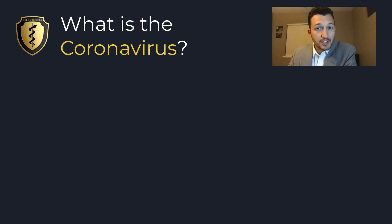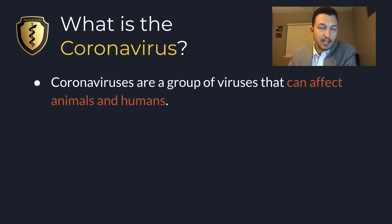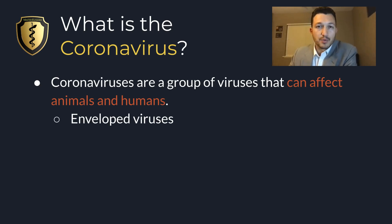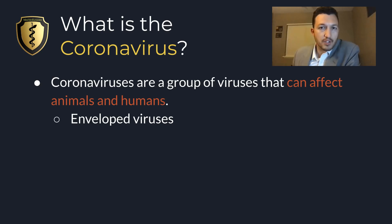So a common question being asked around the world right now with this outbreak is: what is the coronavirus? The coronaviruses are actually a group of viruses that can affect animals and humans. They're a form of an enveloped virus, which means the protein casing that houses the genetic material of the virus is surrounded by a phospholipid membrane that is very similar to the membrane of a human cell.